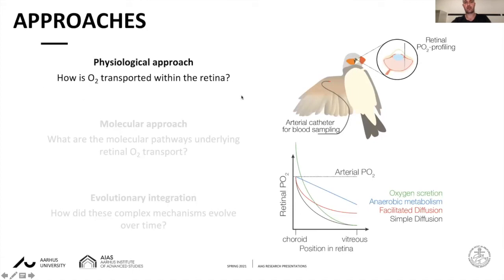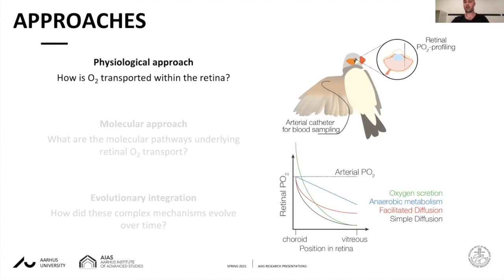In my physiological studies, I want to understand how oxygen diffuses within the retina. I can anaesthetize birds and other animals, insert a very thin glass electrode into the eye, and gain information about the different oxygen levels found in different parts of the retina. By fitting different mathematical models for oxygen diffusion to the data, I can gain information about the physiological mechanisms underlying gas diffusion.